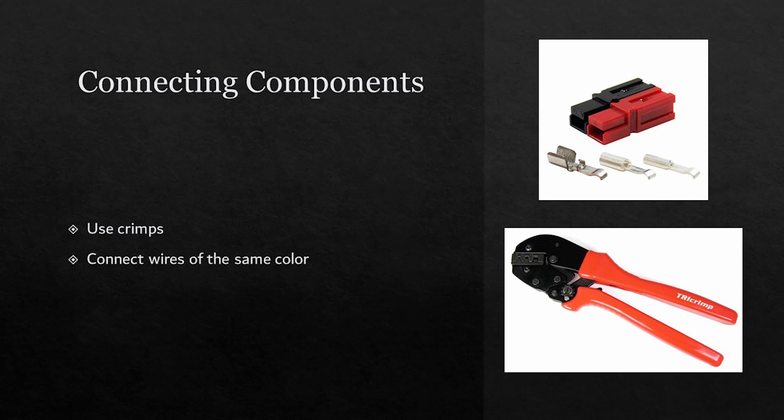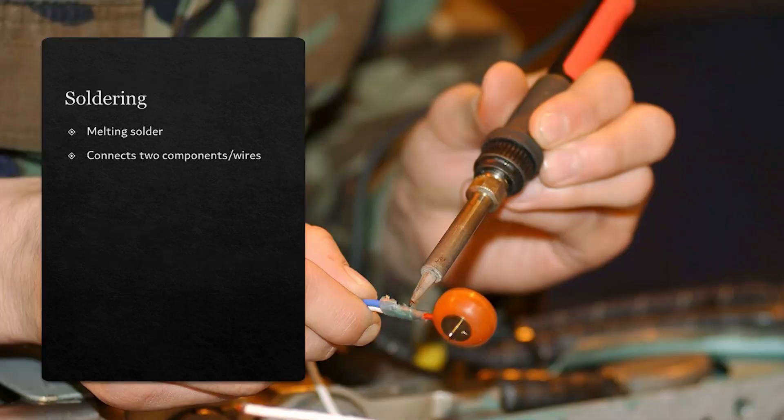Crimps are used as opposed to soldering so that components can easily be taken apart and reused for future years. This also standardizes our connections. When doing this, ensure that wires of the same color are being connected to each other so a short does not occur.